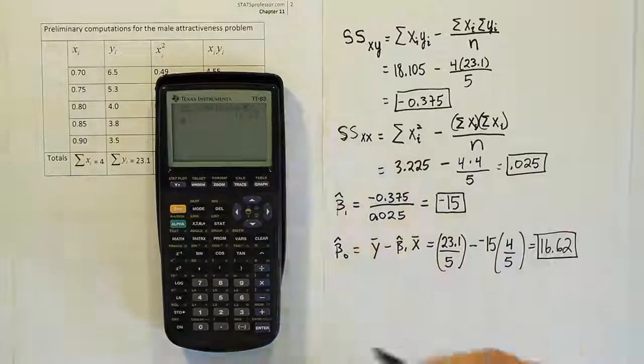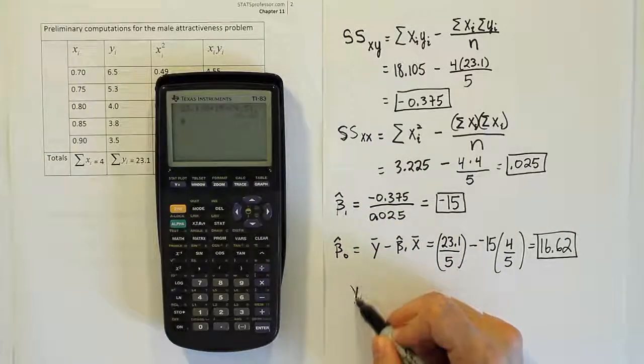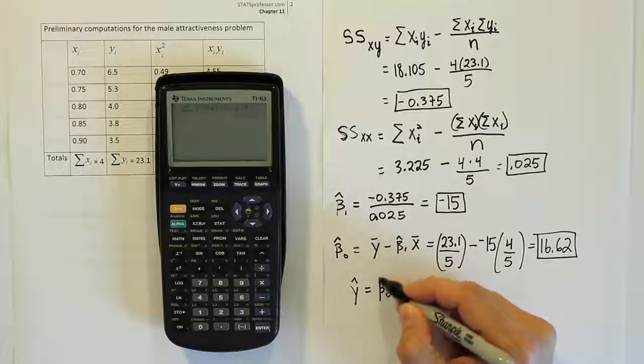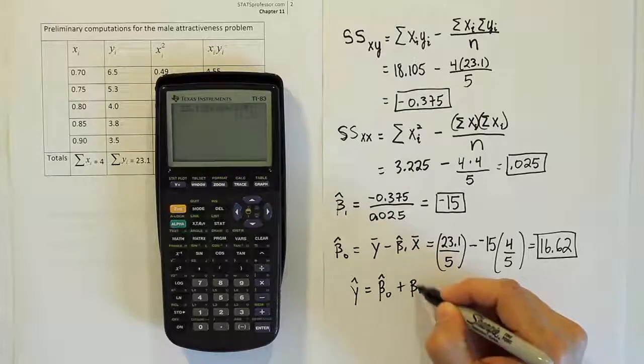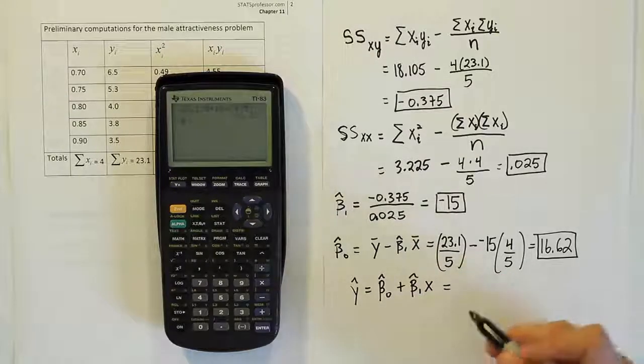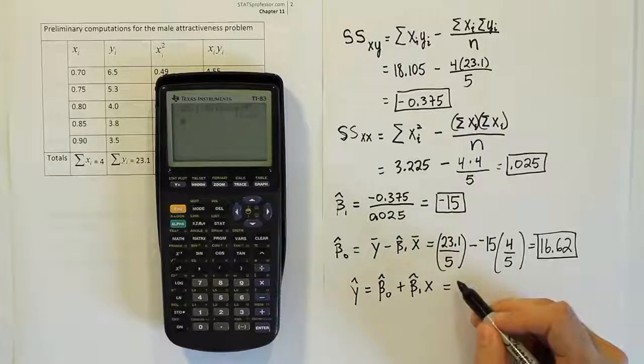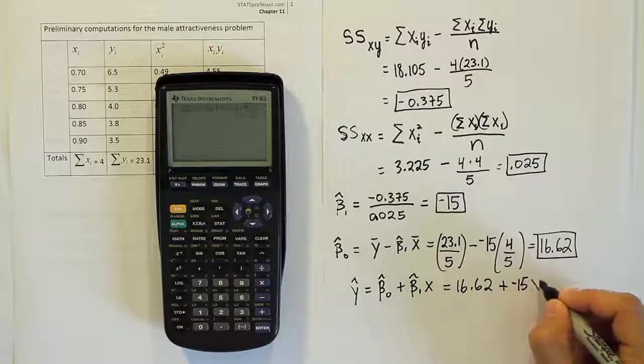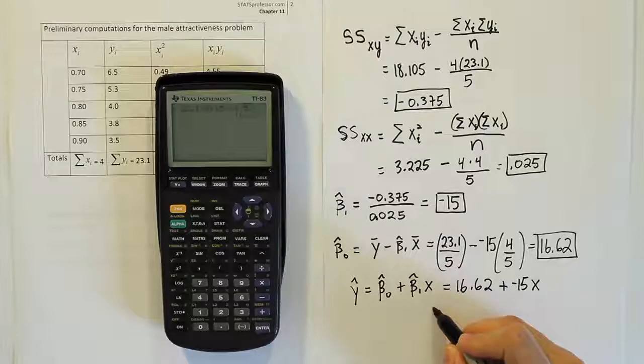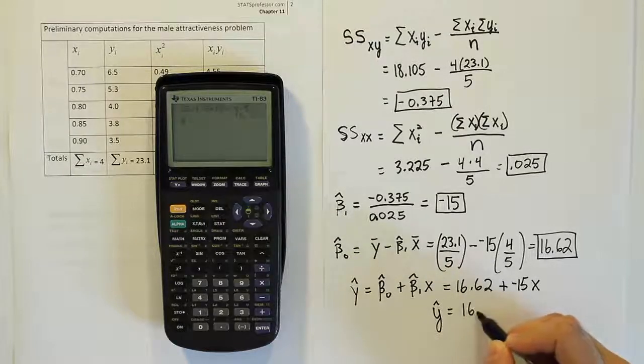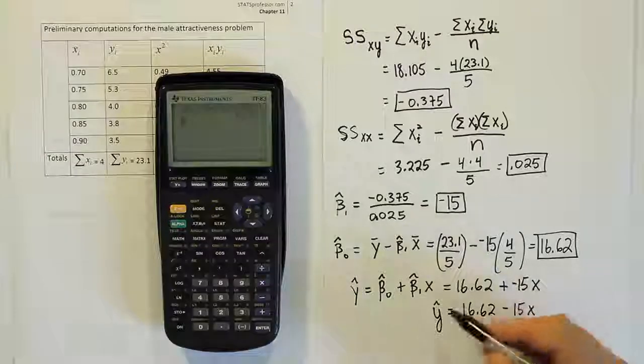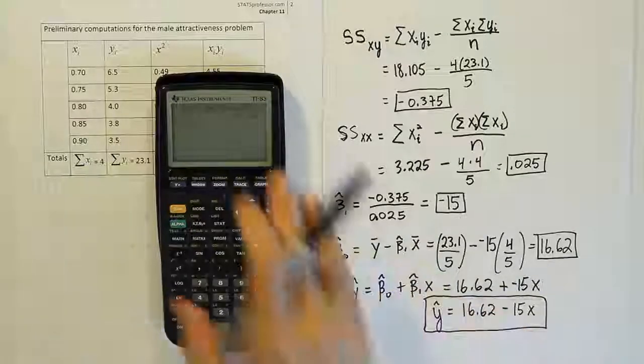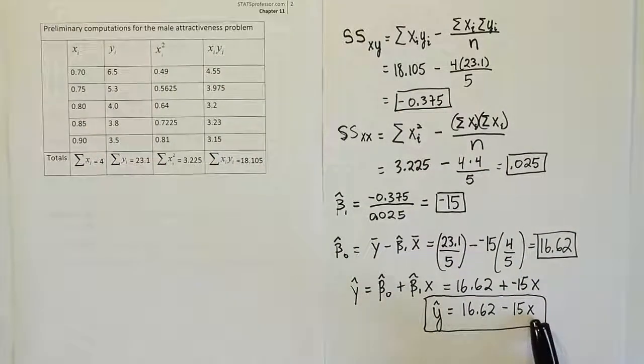You have your slope, you have your y-intercept. It's time to plug it into our model. Our model then becomes y-hat equals, I'm going to put the y-intercept first plus the slope times x. When we plug that in for us, we're going to have the y-intercept is 16.62 plus the slope which is negative 15 times x. This equation basically is y-hat equals 16.62 minus 15x. And that is finally our model. This model is designed to predict the woman's attractiveness rating for men with a certain waist-to-chest ratio.